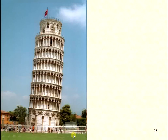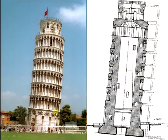A famous example of tilting due to settlement is a well-known structure. Most scientists try to prevent its settlement or stabilize it, but every year it tilts approximately 5 to 10 degrees per year.